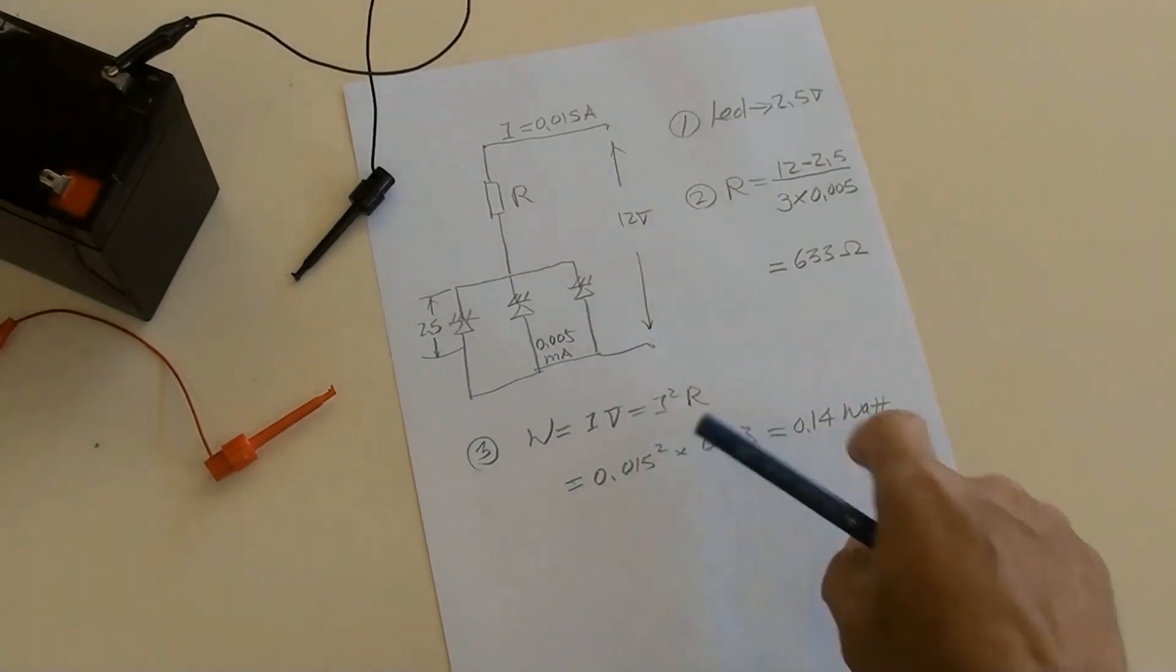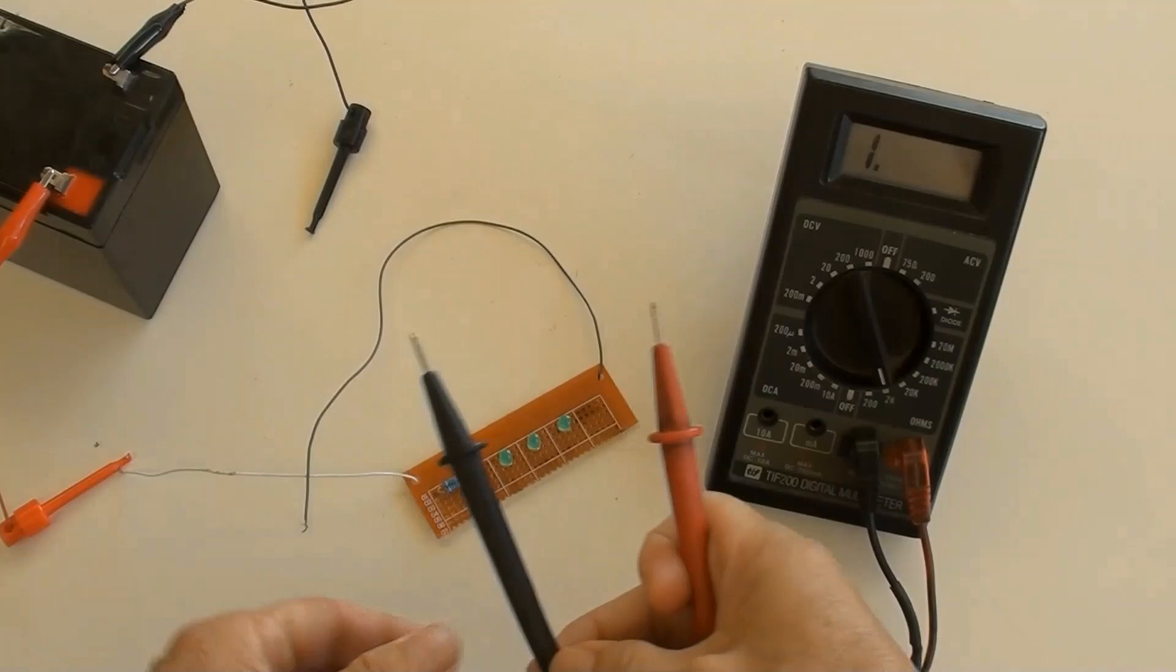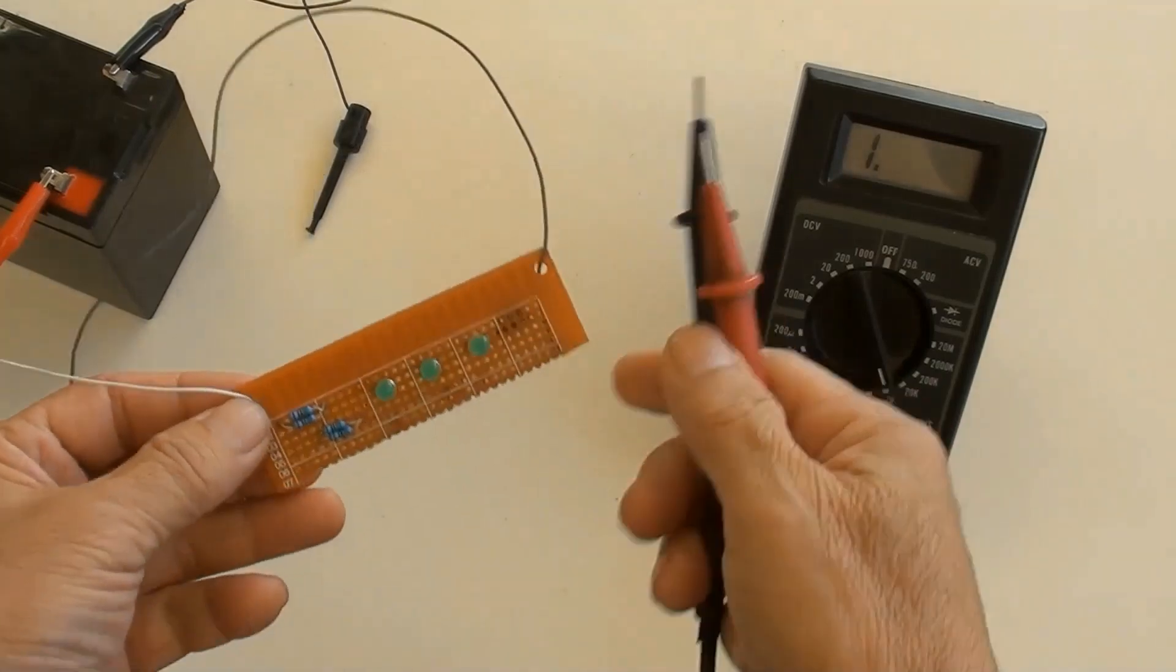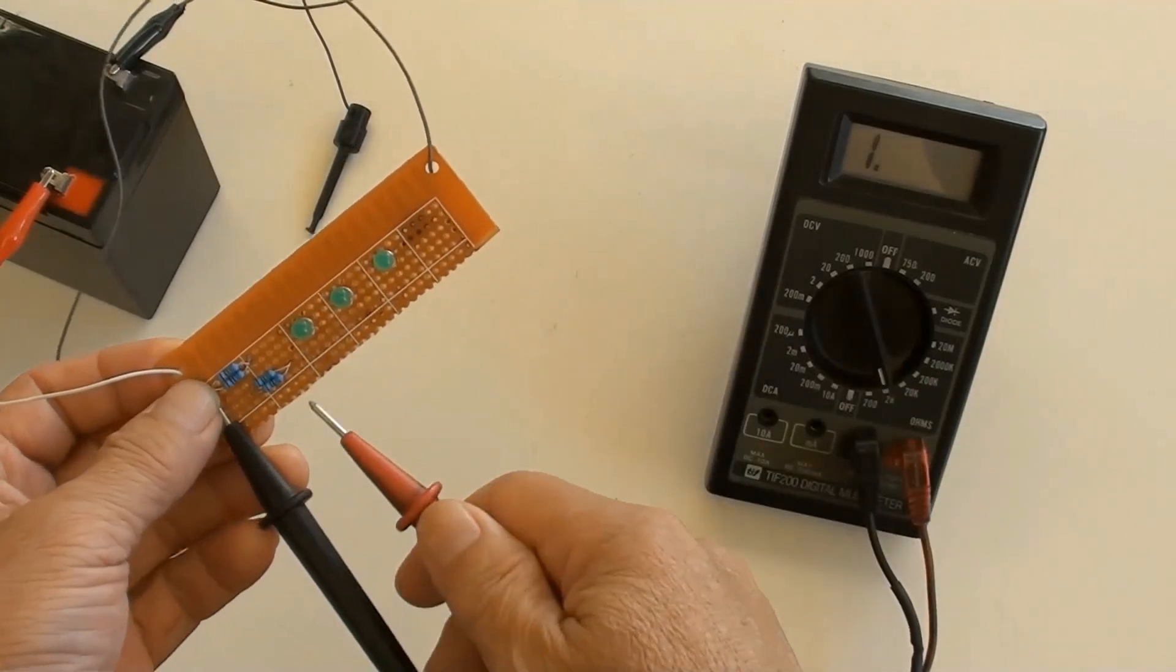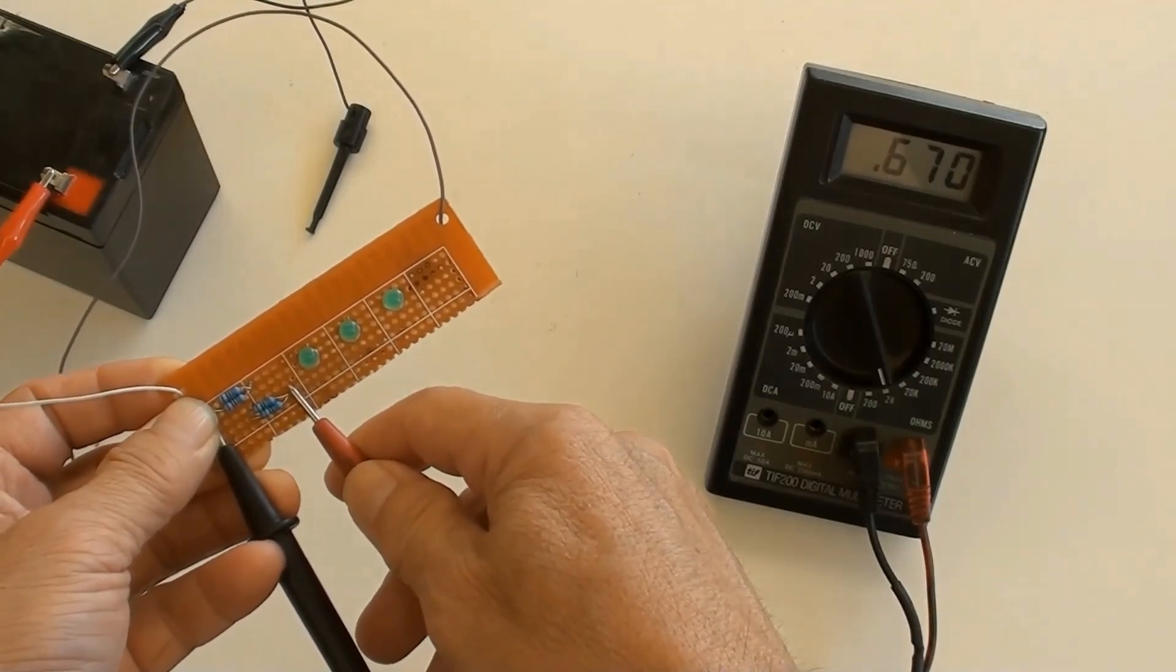So it is okay to choose a one quarter watt resistor. This PCB with three LEDs was made by that circuit and now checking the DIY resistors value. 670 ohms was indicated by the multimeter.